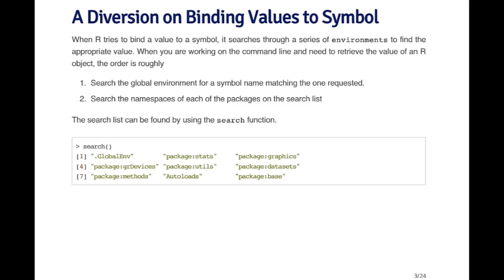The global environment is just your workspace and consists of all the things you've defined or loaded into R. If there's a matching symbol there, R retrieves the value associated with that symbol. So in this case, I defined LM in my global environment, and because that exists, when I call LM at the command line, it's going to find that object first. If there's no match in the global environment, then R will search the namespaces of each of the packages on the search list.